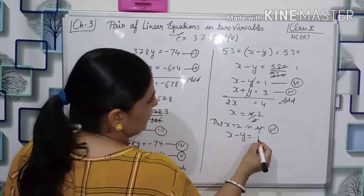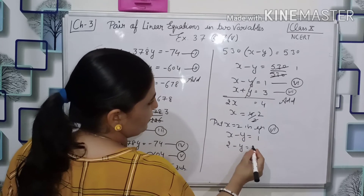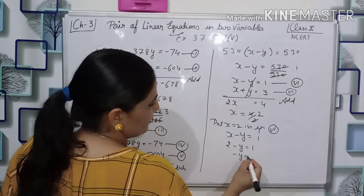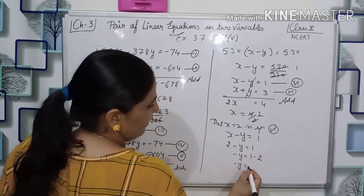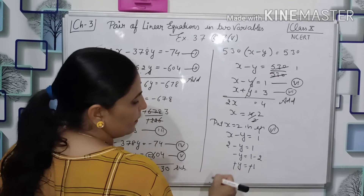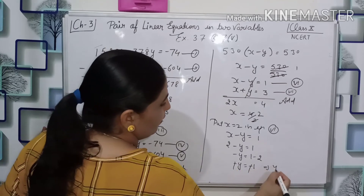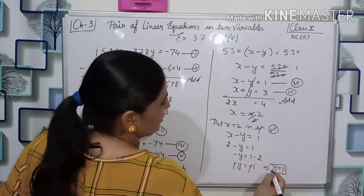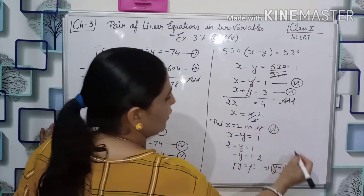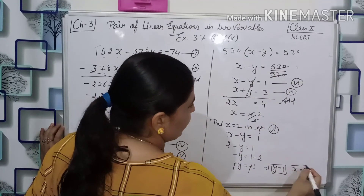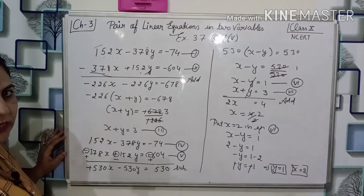Now substituting x equals 2 into x minus y equals 1: we get 2 minus y equals 1, so minus y equals 1 minus 2, which gives minus y equals minus 1. The negatives cancel and y equals 1. Therefore, x equals 2 and y equals 1.